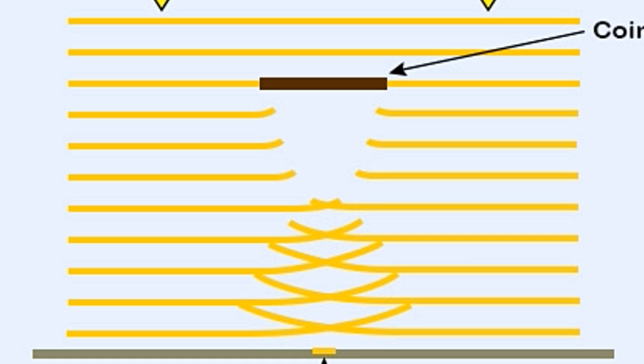The result is that a pattern comprising alternate dark and light rings is formed on the wall behind the coin. The light waves get broken into different wave fronts that converge at a point on the screen to produce the interference pattern shown above.